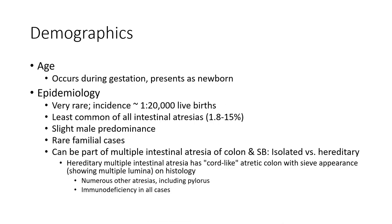Demographically, the condition occurs during gestation, presents at birth, and is identified in the newborn period. Regarding epidemiology, colonic atresia is very rare, with an incidence of 1 in 20,000 births. It is the least common of all intestinal atresias, accounting for 1.8 to 15%. There is a slight male predominance, and rare familial cases can be part of multiple intestinal atresia.